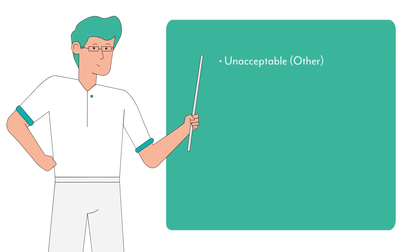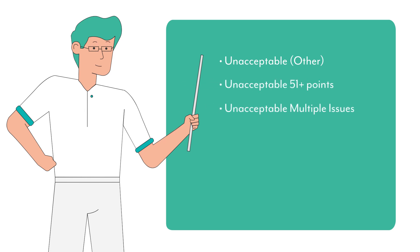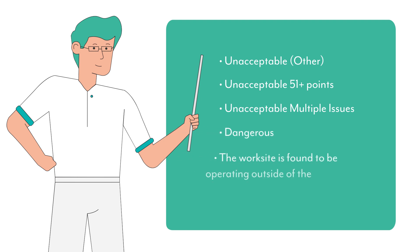Kia ora. In this Here to Help video, I am going to provide some key messages on how to prepare an effective CAP in response to a stop works order issued for the following non-compliant audit results: unacceptable other, unacceptable 51 plus points, unacceptable multiple issues, dangerous, or the worksite is found to be operating outside of the approval conditions.